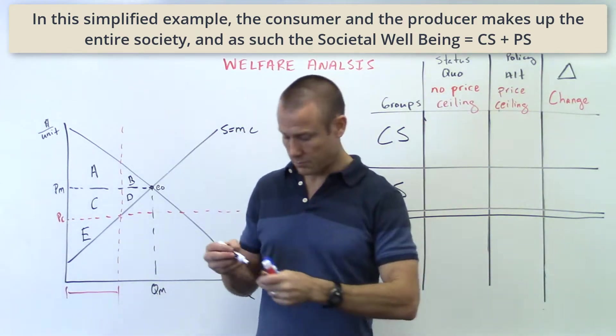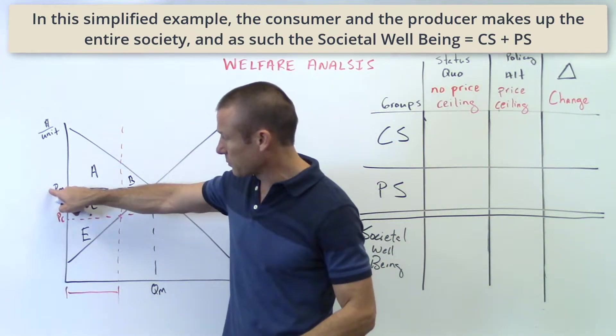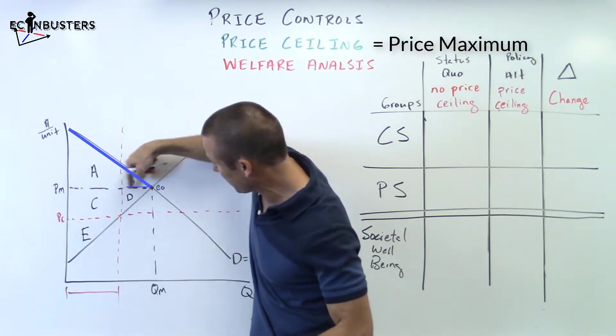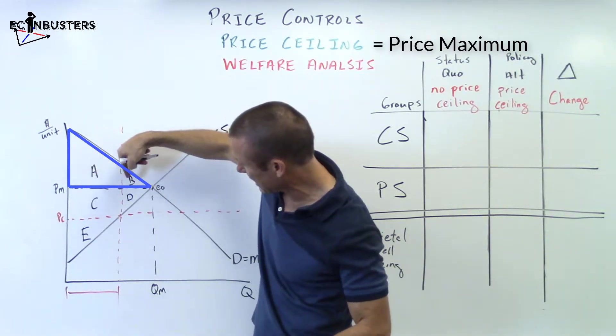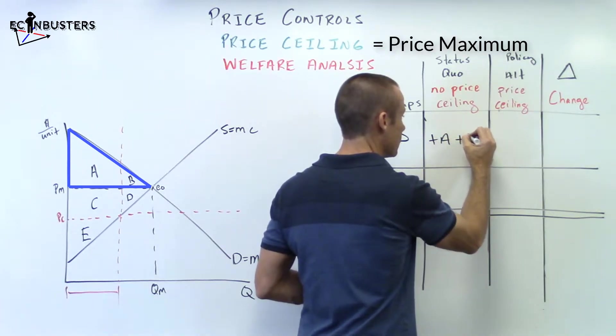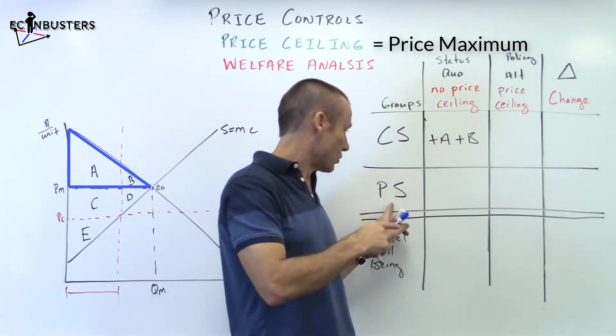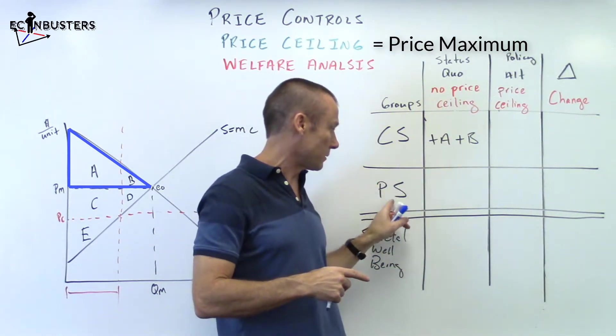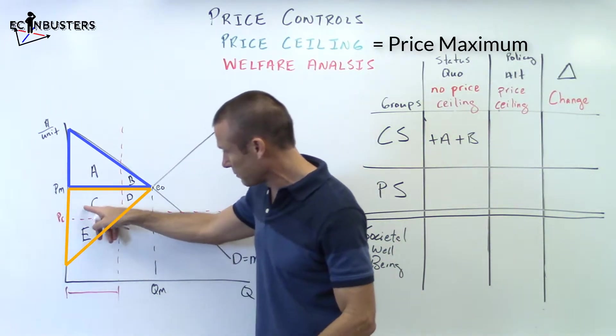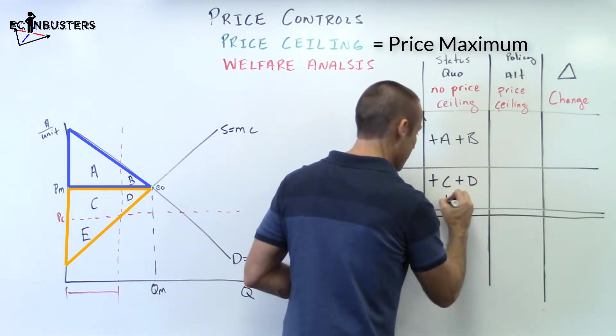Here we go. No price ceiling. Consumer surplus is what we want to fill in. Price market will be the price in the market. That's what the consumer is going to have to pay. There's their marginal benefit. We've already talked about it. They would be getting plus A plus B. Keep the plus signs. Plus signs and minus signs do matter. So plus A plus B. Now, the producer surplus. Producer surplus, no price ceiling. There's the per unit revenue, there's the marginal cost. Plus C, plus D, plus E.